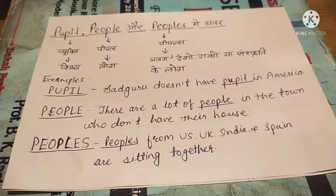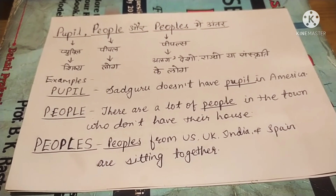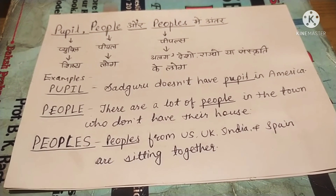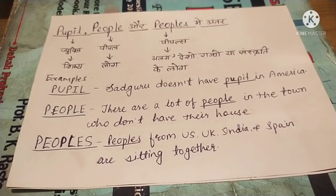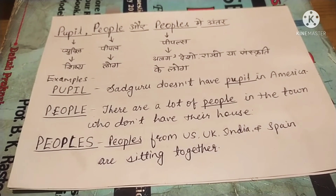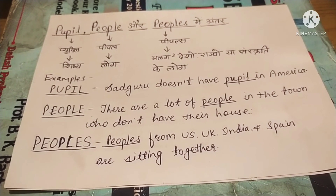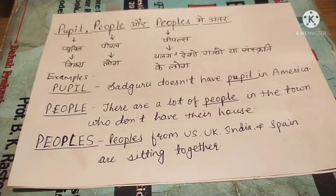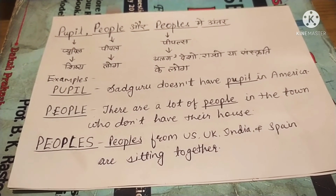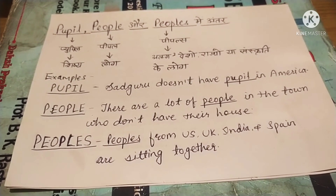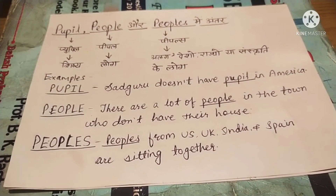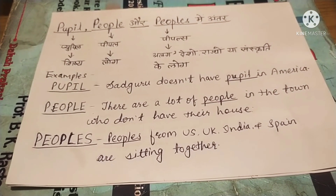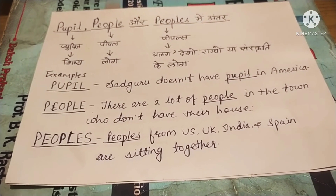Doosra word hai people, matlab log. Ab logon ko bataya ja raha hai. For example: 'There are a lot of people in the town who don't own their house.' Matlab aise bohut saare log hain jinke apna khud ka ghar nahi hai town mein. Toh is mein humne use kiya people.